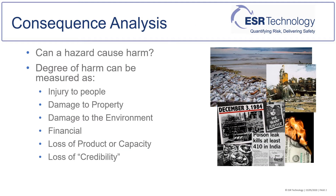If a hazard is realized it will have consequences. These could be in the near field, far field, immediate or delayed, and the degree of harm will also depend on the target. For instance, a fire may only cause minor injury to people but destroy property or habitat, whereas a toxic release may result in fatalities to people in either the short or long term but have no impact on property or the environment.